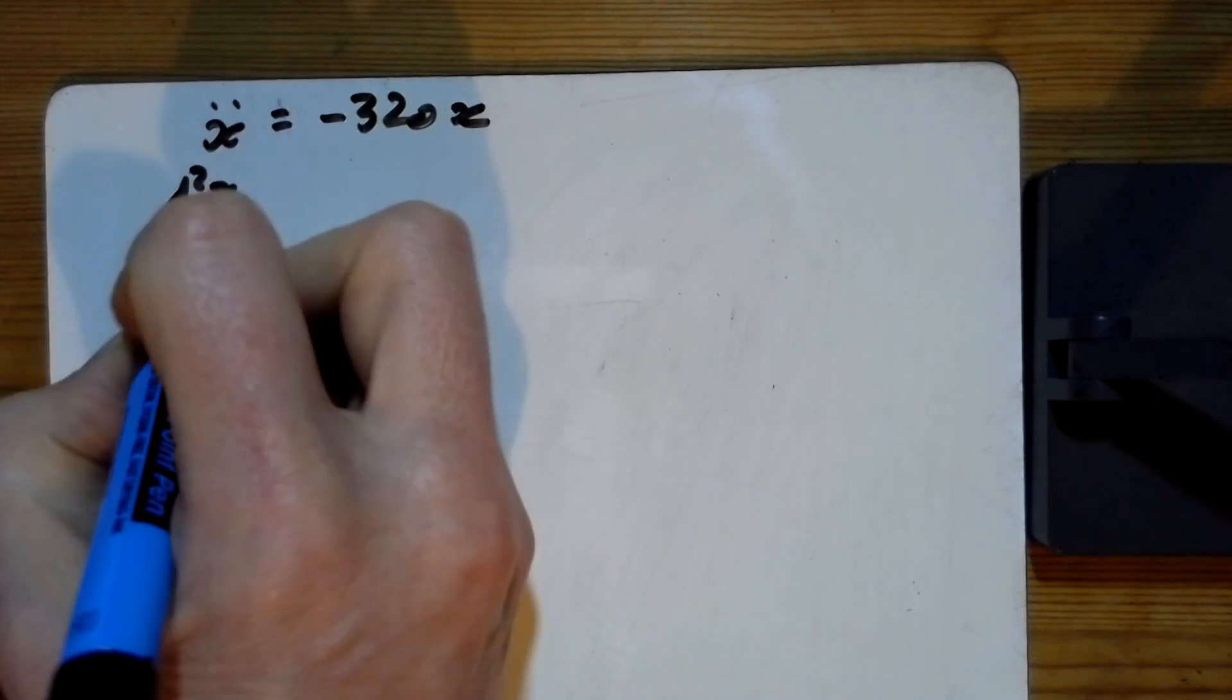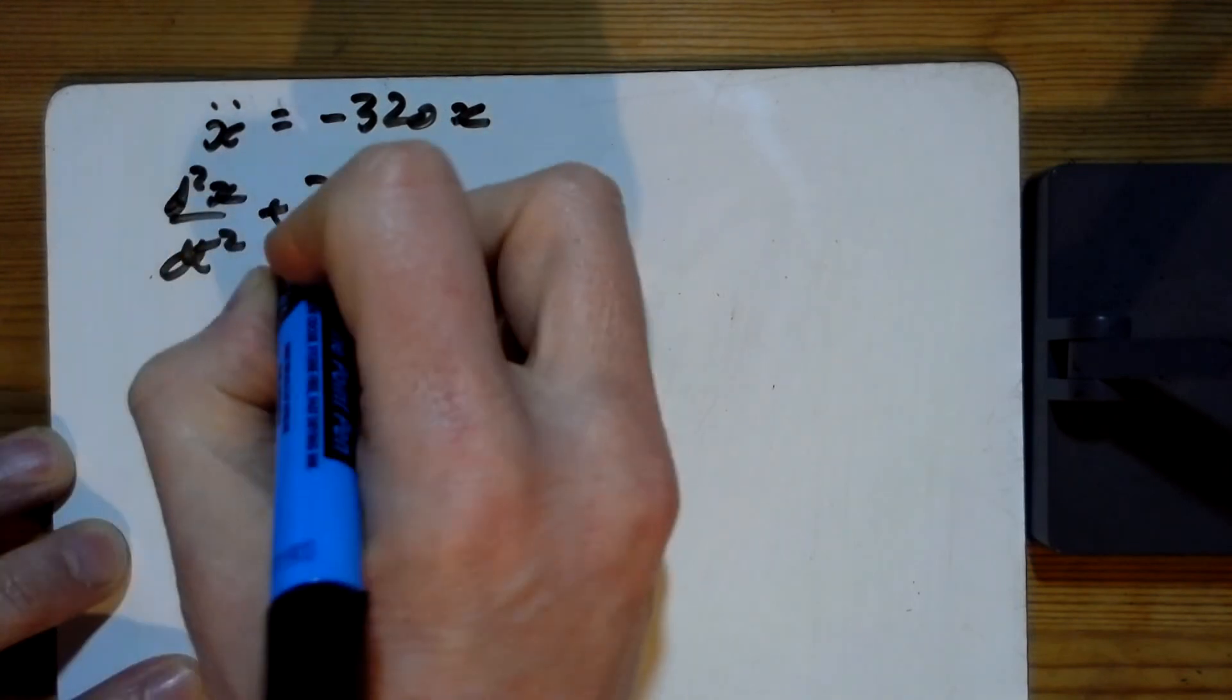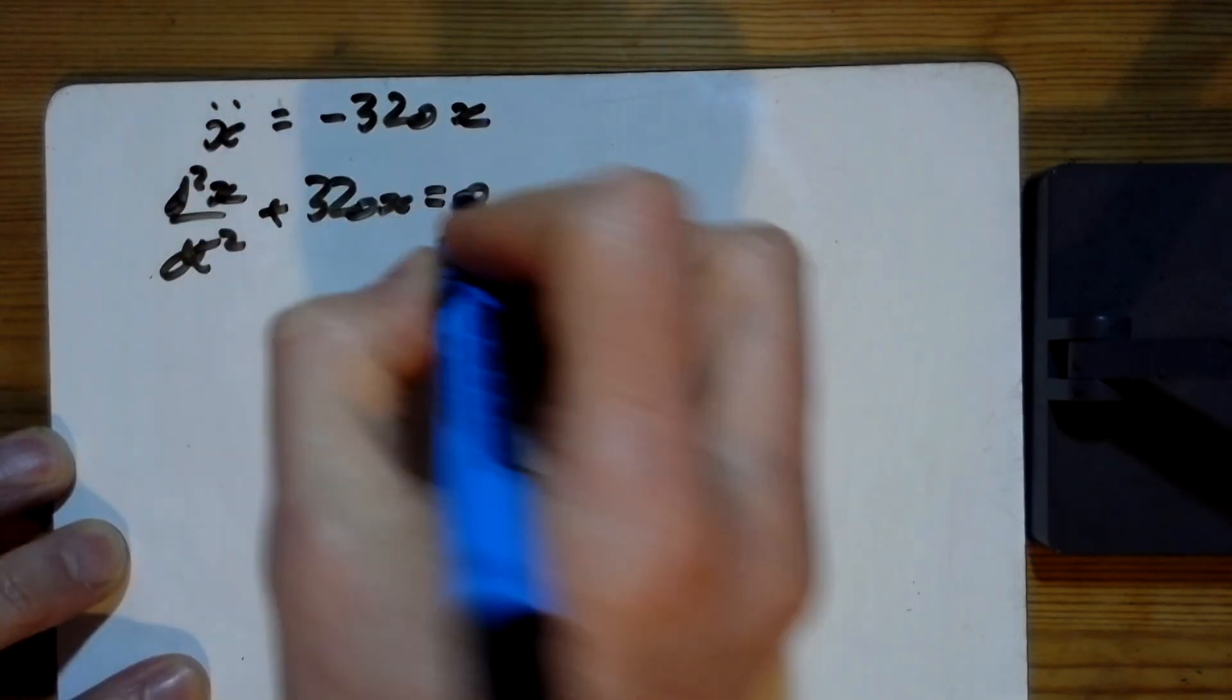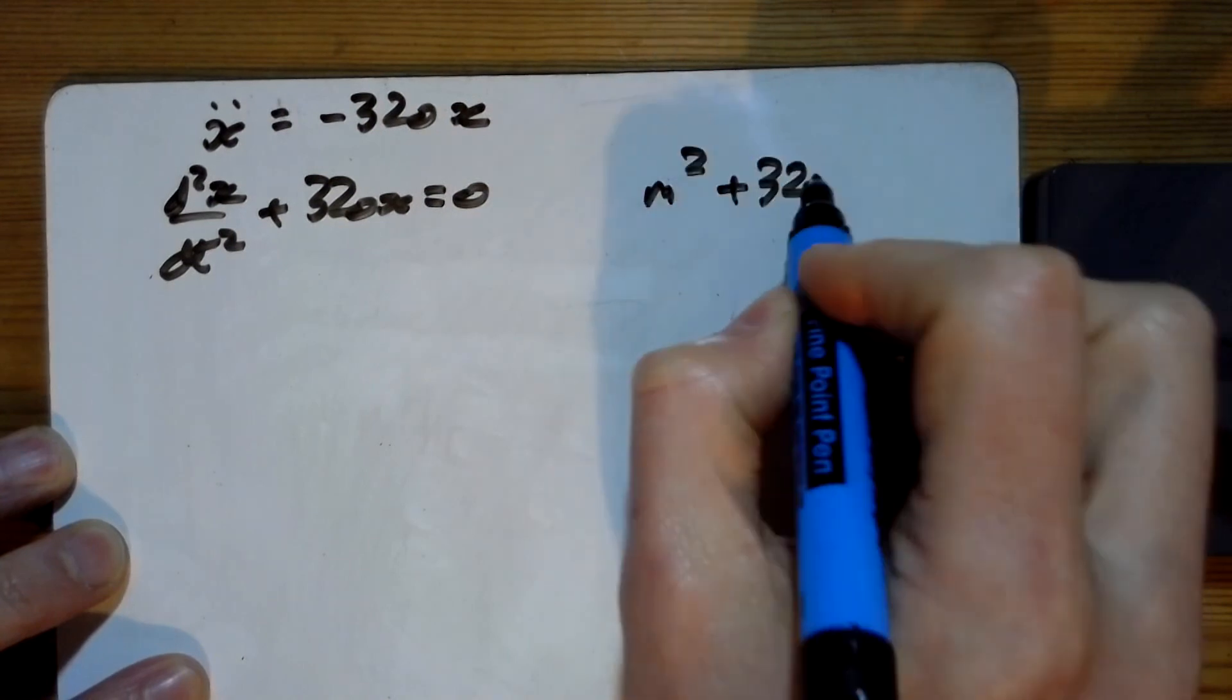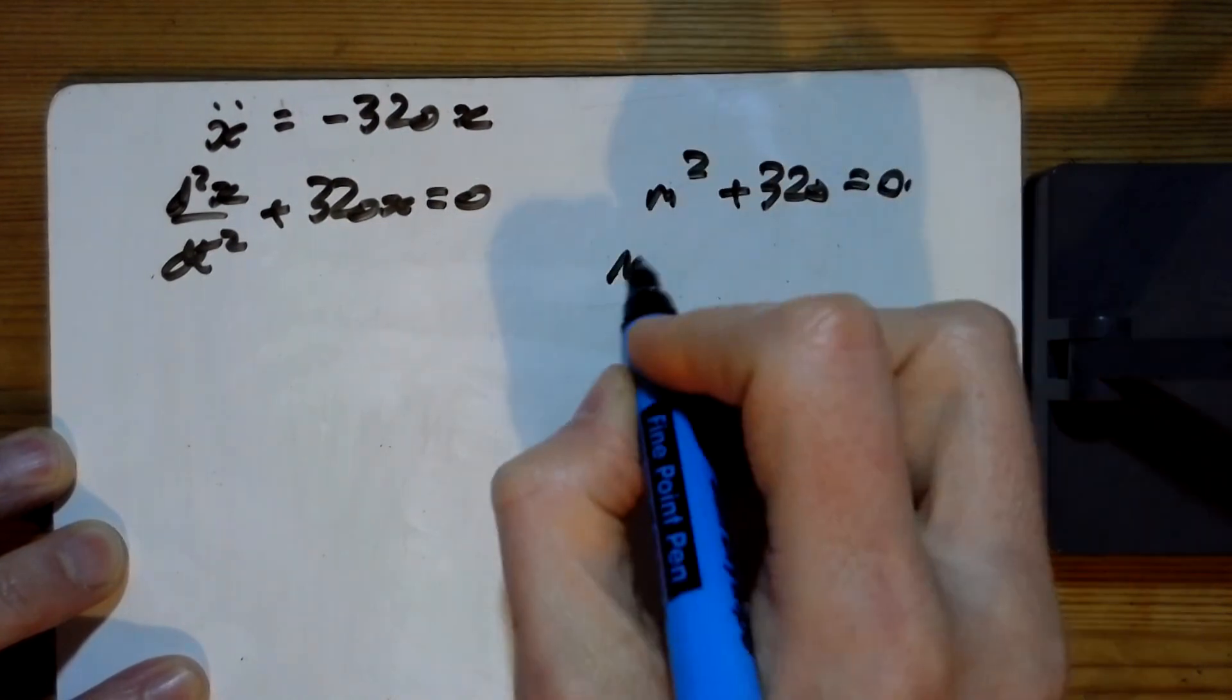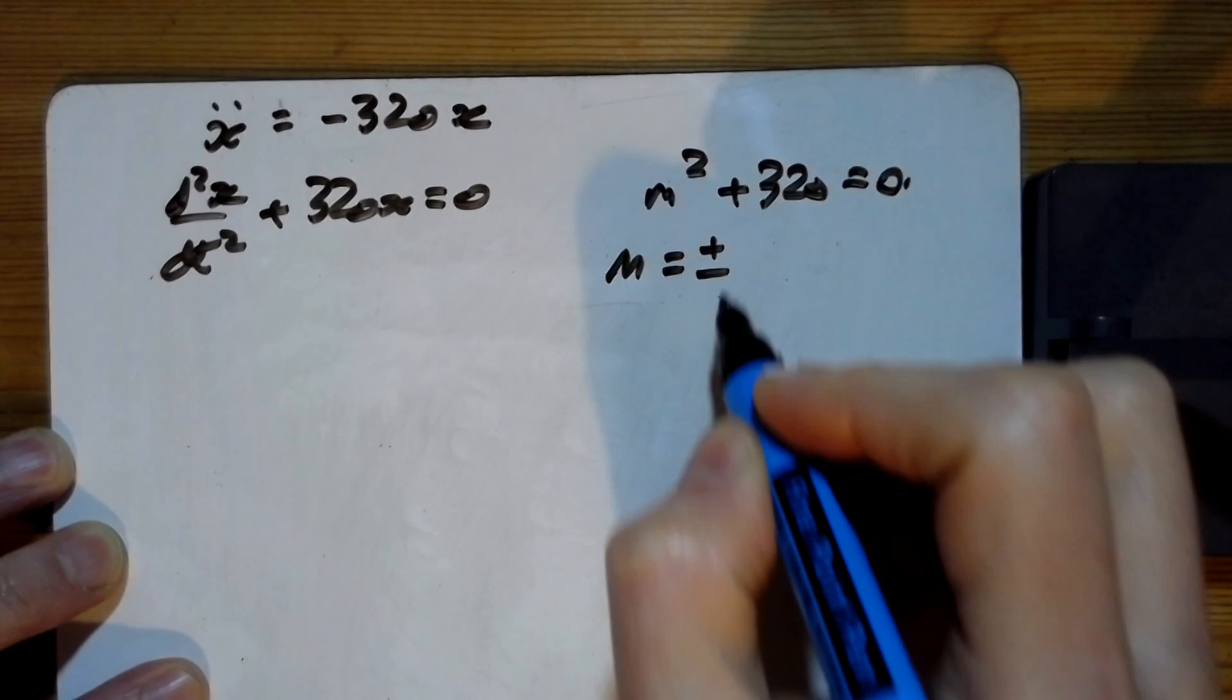d²x/dt² + 320x = 0. So m² + 320 = 0, which means m equals square